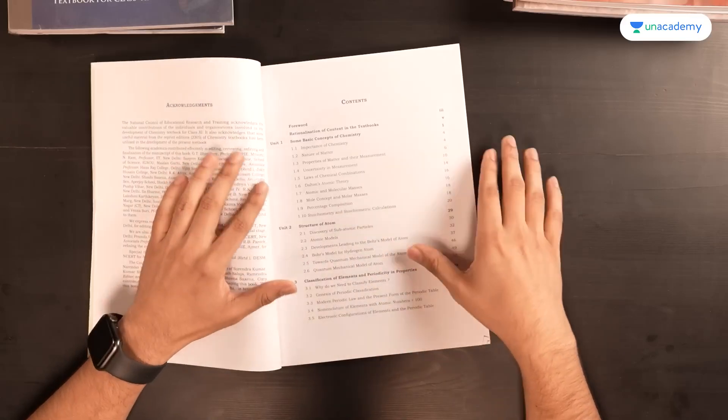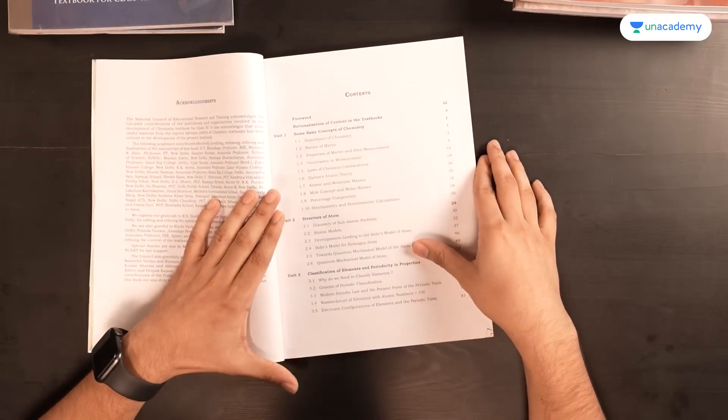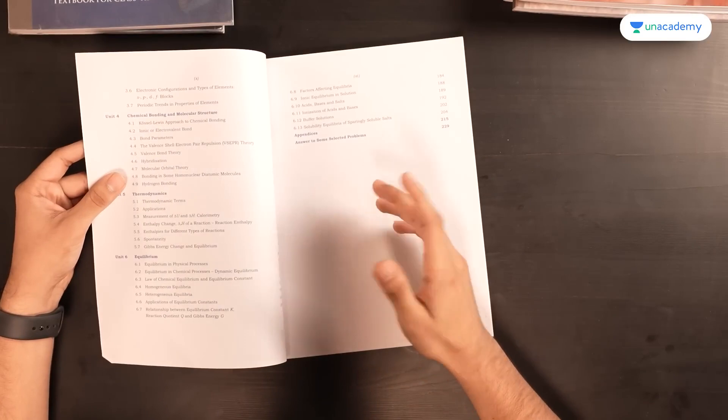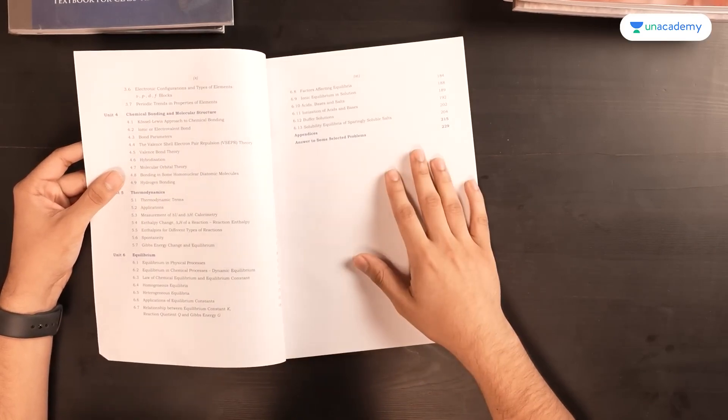These are the chapters which are important to practice and to gain more control over the numericals. Structure of atoms is a more theory based chapter for which you need to go through NCERT. That is important.